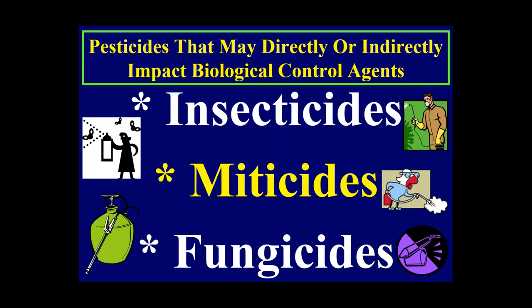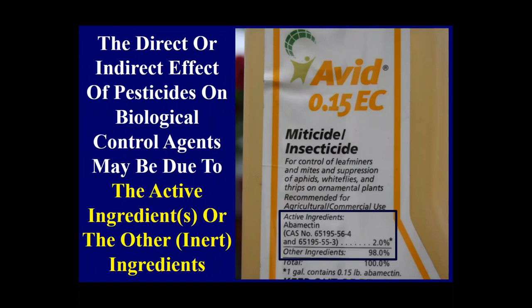Pesticides that may directly or indirectly impact biological control agents include insecticides, miticides, and even fungicides. Fungicides are used to deal with fungal diseases, so the question is: when applied, will they have any direct or indirect effects on biological control agents?